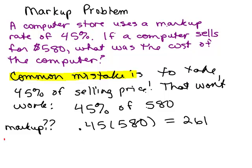580 minus 261. So let's see. If you do 580 minus 261, do that on your own scratch paper, you get $381. So that's the question. Would that have worked to do 45% of 580?